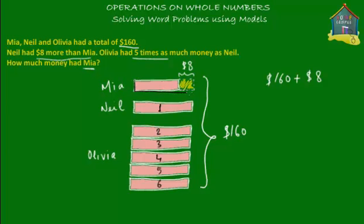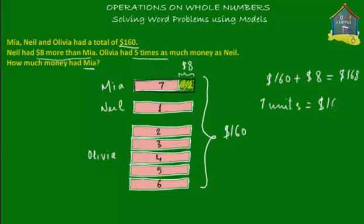Let's assume that this is one entire block, the same size as Neil's block. This is not Mia's actual amount of money, but let's suppose that she has this sum of money — we'll subtract $8 from it later on when we find out how much money Mia had. For now, just assume that Mia also has the same amount of money that Neil does. Then we can call her block the seventh unit. So altogether there are seven units and they equal $168 — that's $160 plus the $8 difference between Mia and Neil's money. So seven units are equal to $168.